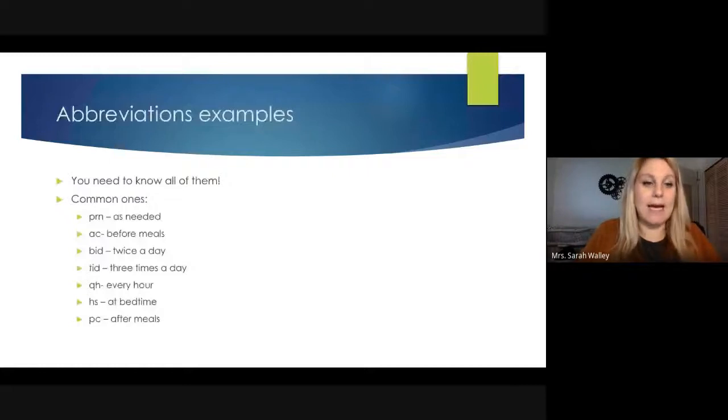Here are abbreviation examples you need to know — these are common ones used in the pharmacy, and they're also general medical abbreviations. PRN means as needed, AC is before meals, BID is twice a day, TID is three times a day. Notice the 'D' always stands for day. QH is every hour, HS is at bedtime, and PC is after meals.